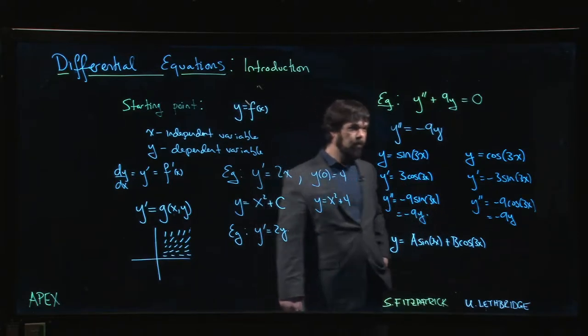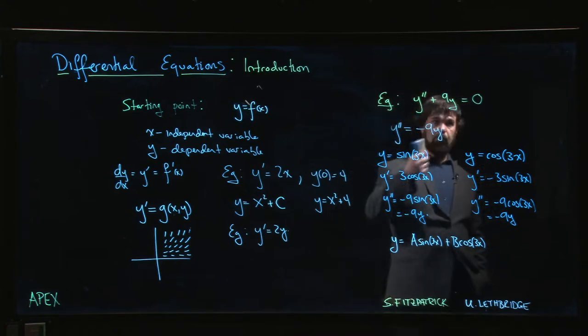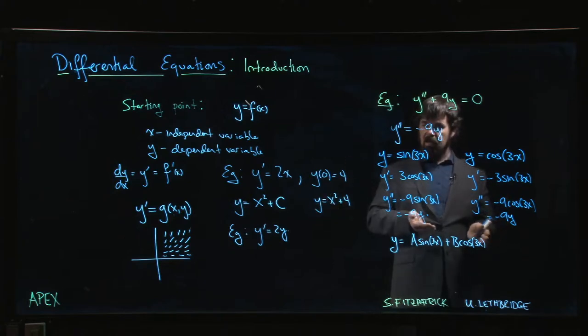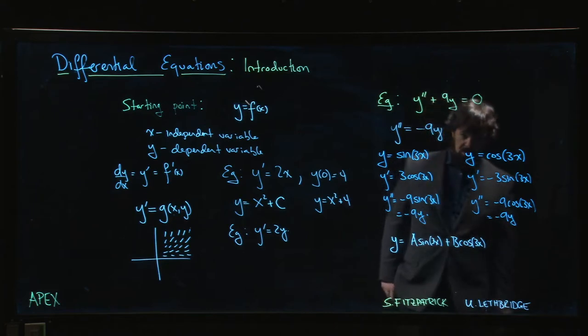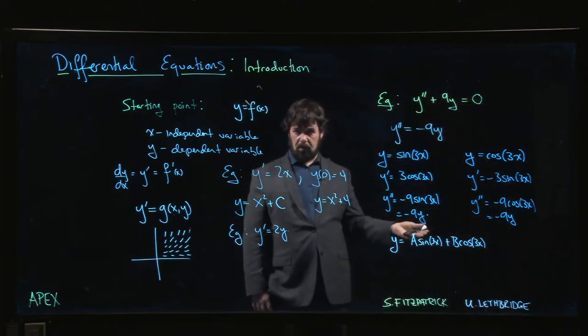How do you come up with values for a and b? Well, again, possibly from initial conditions. If I'm thinking of this maybe as like motion on a spring or something like that, if I know an initial position and I know an initial speed, the initial speed determines y prime. I can recover the values for a and b.